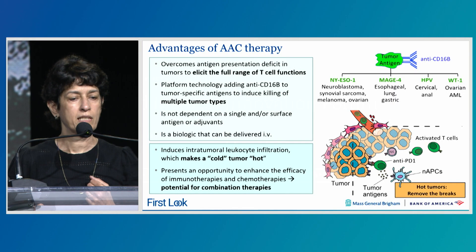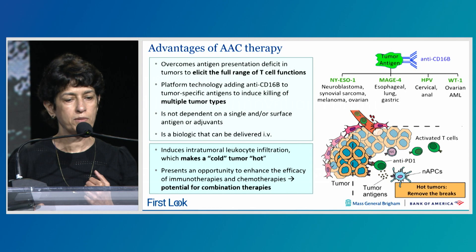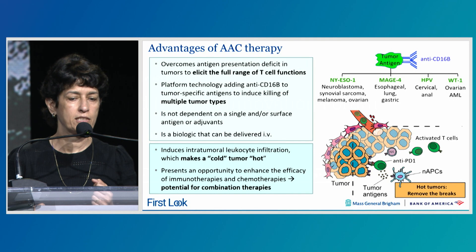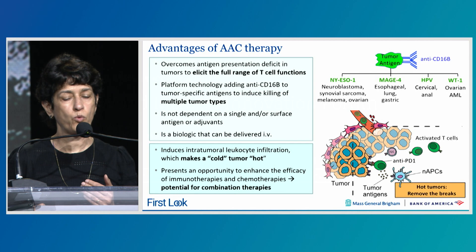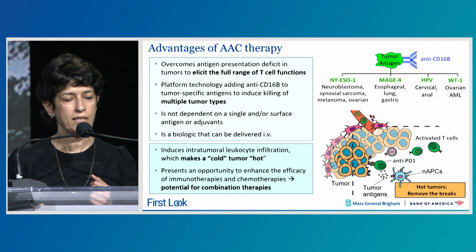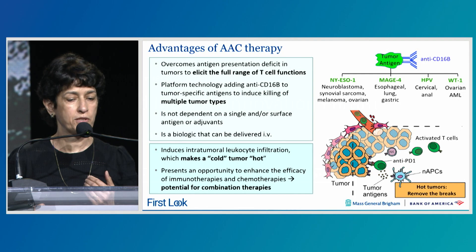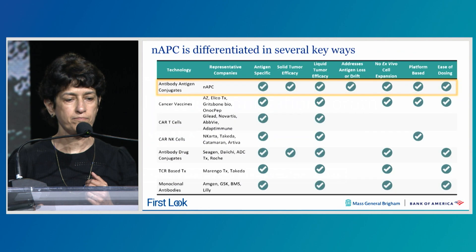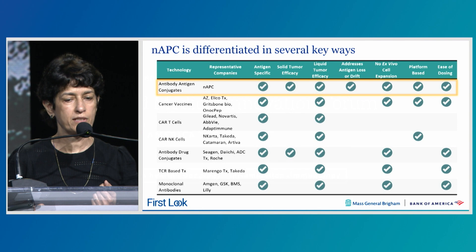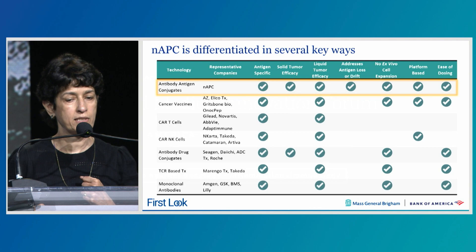The advantages of AAC therapy are that it overcomes the antigen presentation deficit in tumors to elicit the full range of T-cell functions. It is a platform technology where anti-CD16B is conjugated to tumor-specific antigens chosen based on the tumor type targeted. It is not dependent on a single surface antigen or adjuvant, and is a biologic delivered IV. NAPCs are differentiated in key ways: antigen specificity, solid and liquid tumor efficacy, addressing antigen loss or drift, no ex vivo cell expansion required, platform-based design, and ease of dosing.